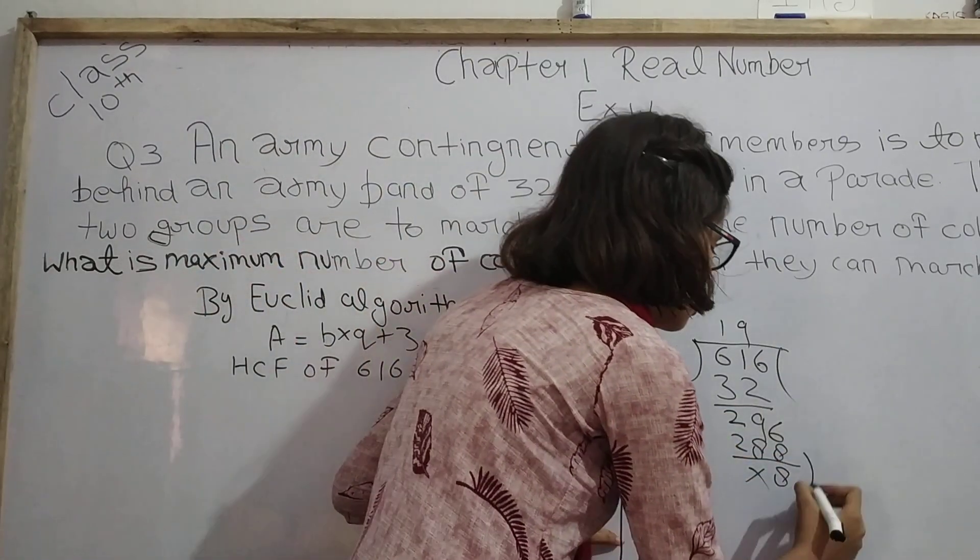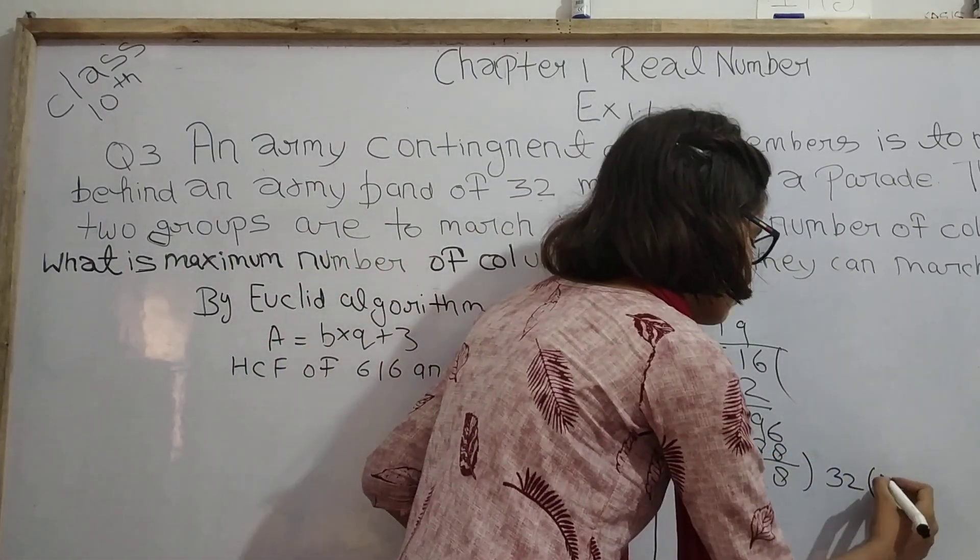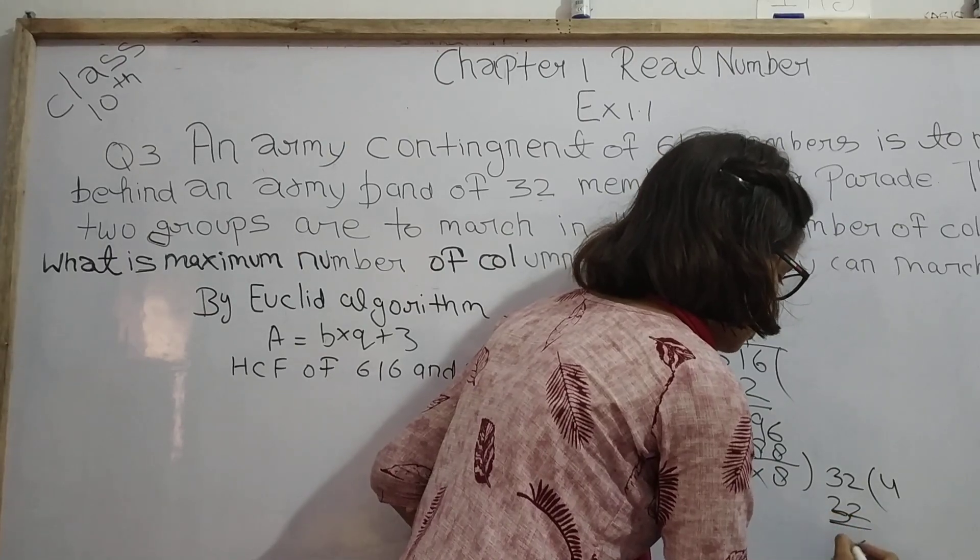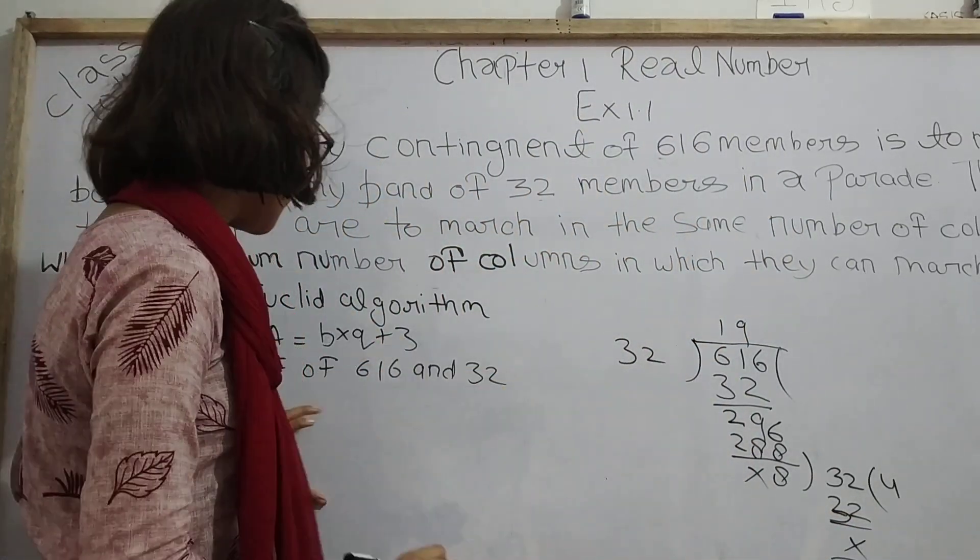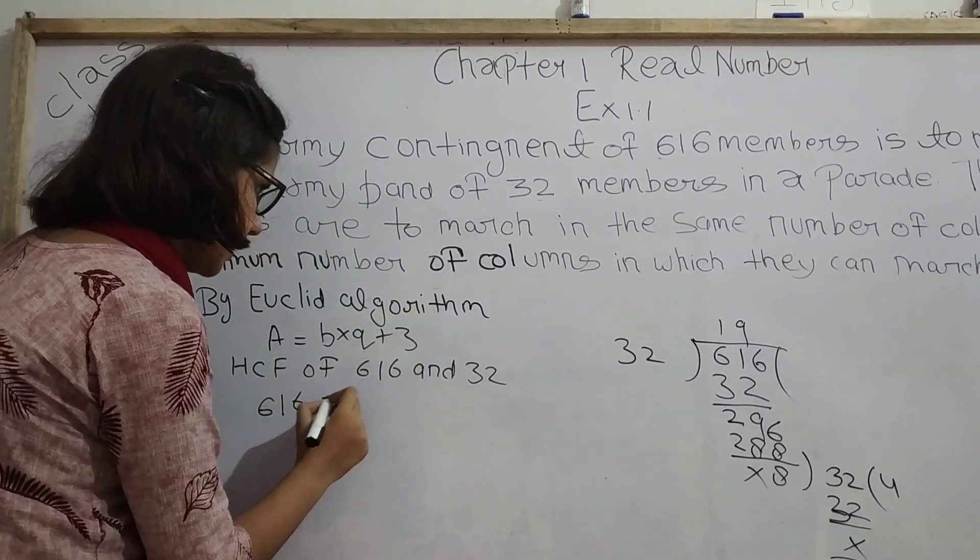Cut it, nothing, zero. So now we can write it in this form: 616 equals 32 into 19 plus 8. Now this 32 as dividend equals 8 into 4 plus 0.